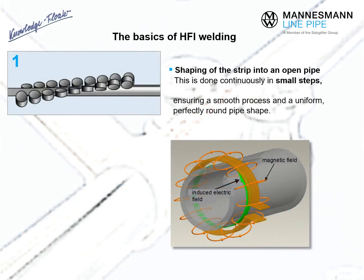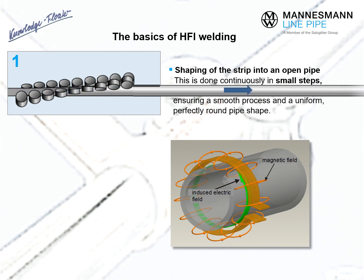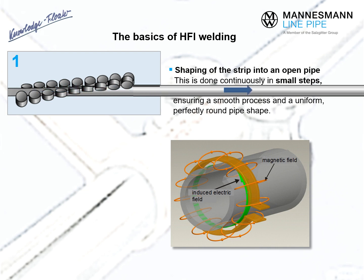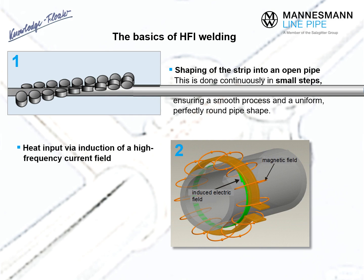The basics of HFI welding. To start with, the strip is shaped to an open pipe. This is done continuously in small steps to ensure a smooth process and a uniform, perfectly round pipe. The next step is contact-free heat input by high frequency induction of an electromagnetic field.